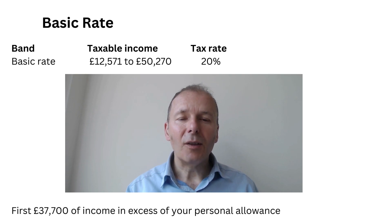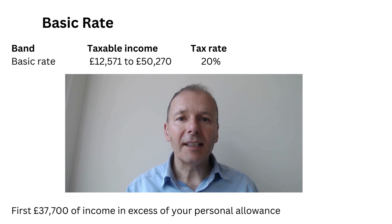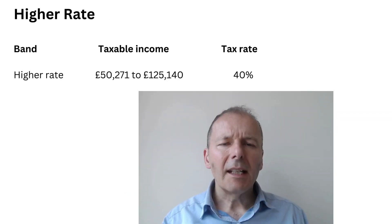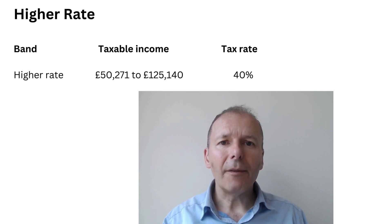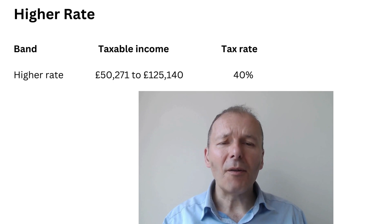In England and Wales, the basic rate of tax is 20% and applies from £12,571 to £50,270 — essentially the first £37,700 of income after your personal allowance has been used up. The higher rate of tax is 40%, applying from £50,271 up to £125,140.